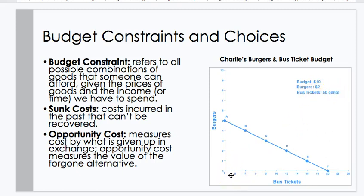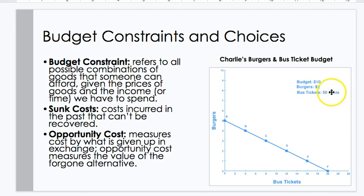So if Charlie were to spend all of his money — $10 — on burgers, $10 divided by the price of $2, he would be able to buy five burgers. And if he spent all of his money, $10, on bus tickets at $0.50, he would be able to get 20 bus tickets. You could draw a line between those two endpoints, and that is the budget constraint.